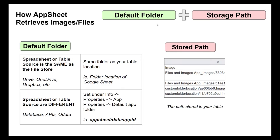Let's get into how to figure out the default folder and storage path when retrieving images and files. Normally, you don't need to worry about this. If you start with a brand new app and all your data is flowing into your application, there's little to no reason why you'd ever need to understand how AppSheet retrieves the images or files because they will just work automatically. However, if you need to import data from another system or you're migrating existing data from another source and you want to make it available in your app, you need to be aware of how AppSheet constructs these image paths.